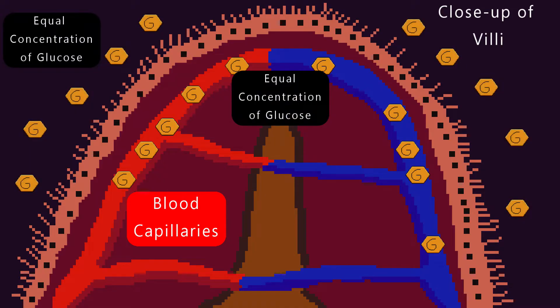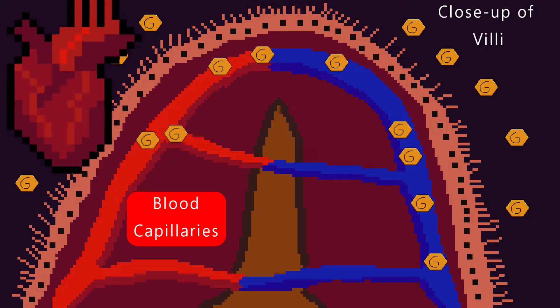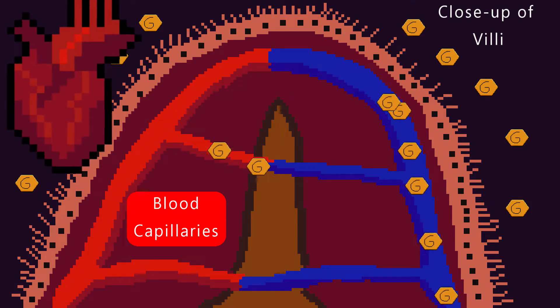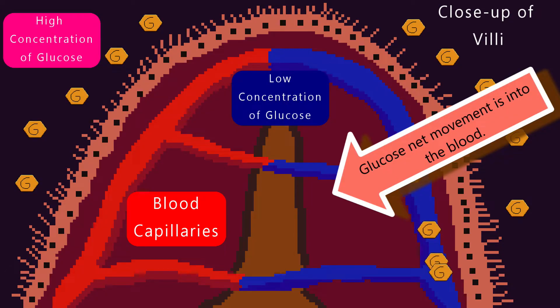If no fresh blood is passing through the villi, eventually the glucose would reach equilibrium and the net movement of glucose would be equal in both directions. Luckily, our heart pumps fresh blood all the time, so glucose is always carried away from the villi, keeping the glucose concentration always low in the villi.